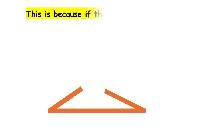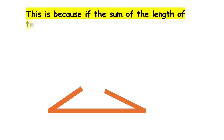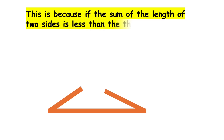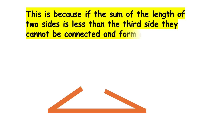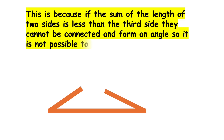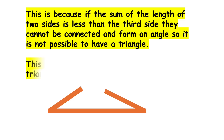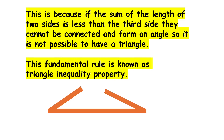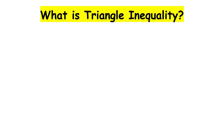It is not possible to form a triangle in all cases. This is because if the sum of the length of two sides is less than the third side, they cannot be connected to form an angle, so it is not possible to have a triangle. This fundamental rule is known as the triangle inequality property.